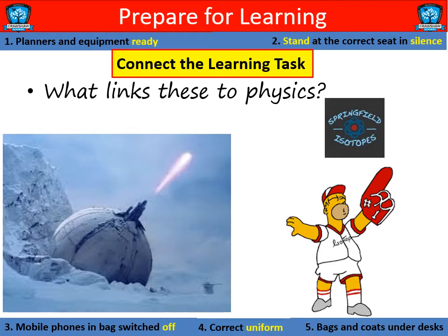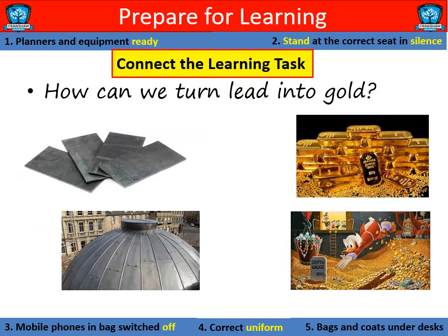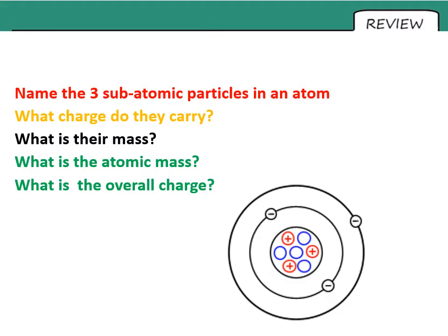A few links to physics here. So fans of the Simpsons or Star Wars may notice that is an ion cannon on the left and that the baseball team in the Simpsons are the Springfield Isotopes. Both terms we'll encounter today. Another question we'll look at today is how or indeed can we turn lead to gold? Alchemy. Something that's puzzled many scientists for thousands of years.